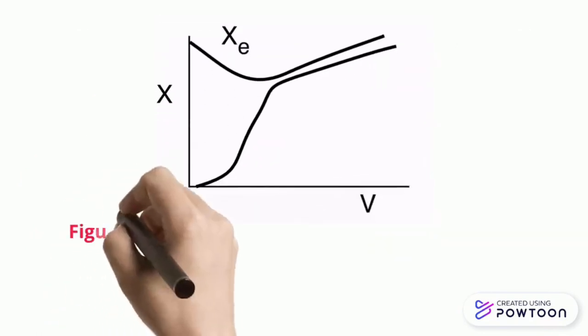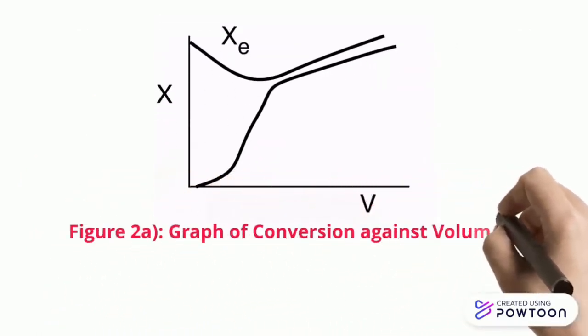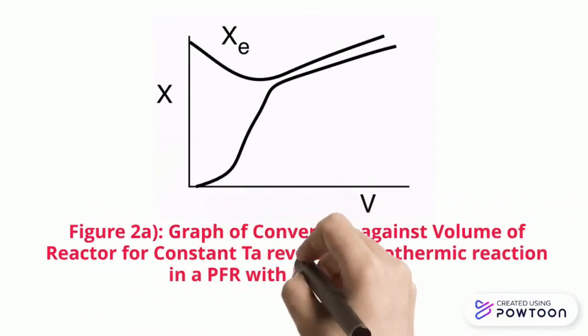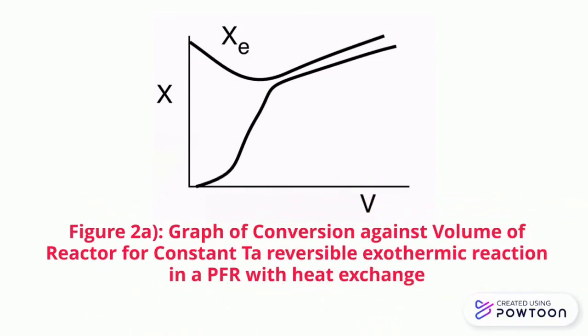Figure 2A shows the graph of conversion against volume of the reactor for constant TA, for reversible exothermic reaction in a PFR with heat exchange.